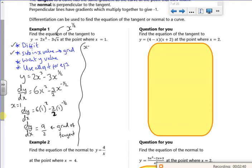Alright, so I've differentiated. I've got the gradient of the tangent. I need the y value now. So when x is 1, y is 2 lots of 1 cubed minus 3 lots of root 1. So what's that? Minus 1 is it? Yeah. Minus 1.